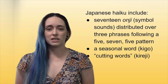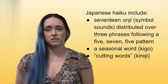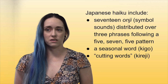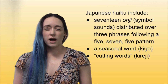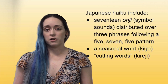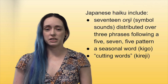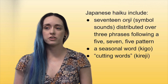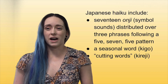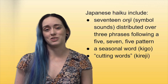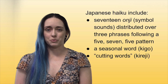Because syllables in English are not exactly the same as onji, Japanese symbol sounds, English language haiku do not necessarily follow that 5-7-5 pattern. And in Japanese, there are other terms for poems that do not exactly do what a haiku is supposed to do.